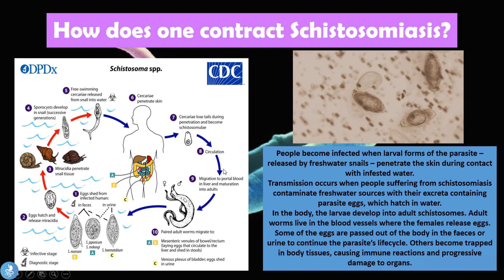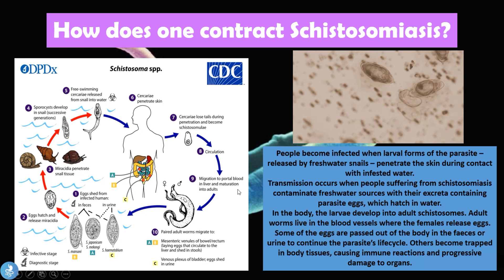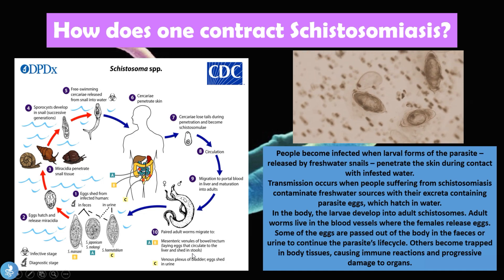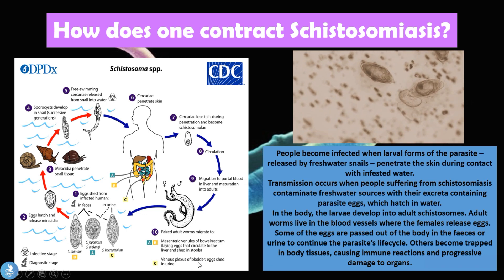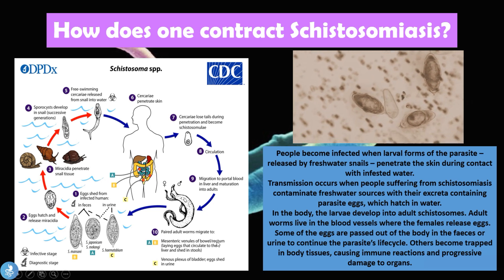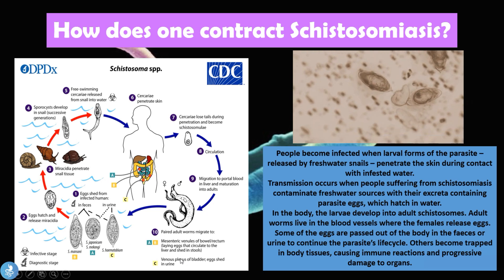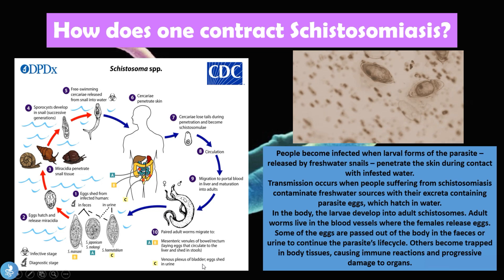The schistosomulae reach the circulation and travel to the liver, where they migrate to the portal blood and mature into adult worms. The paired adult male and female worms then migrate to the mesenteric venules of the bowel and rectum, where they lay eggs that circulate in the liver and are shed into the stool. They also migrate to the venous plexus of the bladder, where eggs are shed into the urine. S. mansoni and S. japonicum typically migrate to the bowel and rectum, while S. hematobium migrates to the bladder.